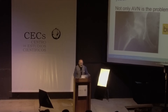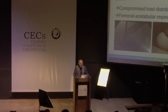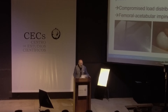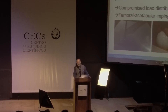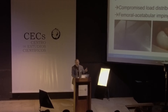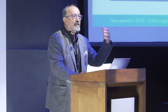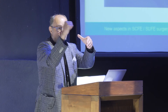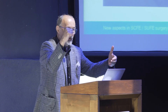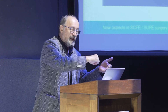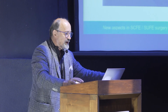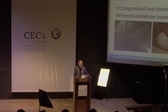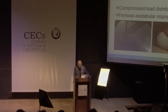Not only AVN is the problem, but also stability and impingement. We should also change our terminology — 'SCFE' is wrong. It is not a slipped capital epiphysis. As you can see in your model, the neck goes out and the head remains in the joint. This is compromised load distribution and femoral impingement, as you see here. Even in a mild form, this hip is open and this part creates the impingement. Nowadays we fix this hip but with arthroscopic technique to create an offset to prevent impingement — this is the CAM situation.